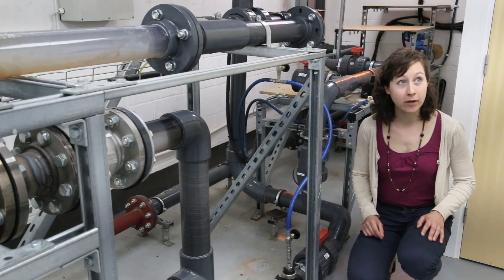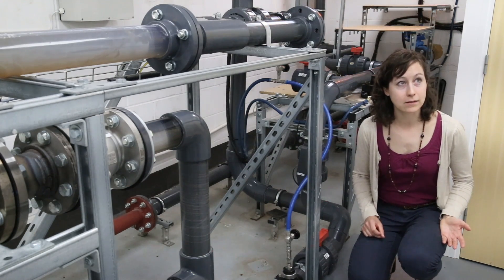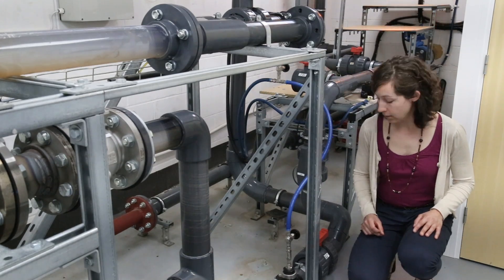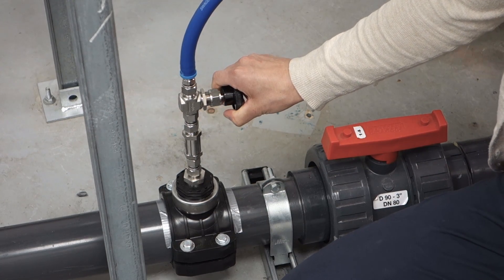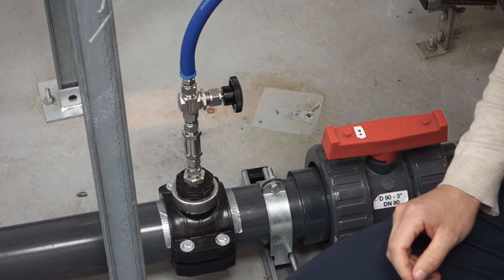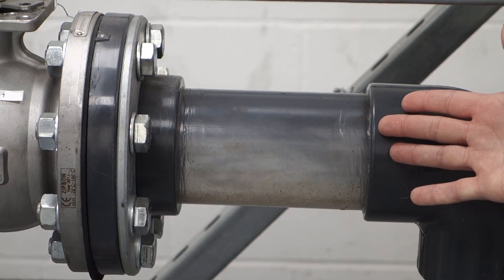This is a port from which we can inject gas into the flow loop. This will have a direct impact on the sound speeds we measure. So I'm going to turn it on. Now you can look inside our observation window and see the flow mixture.